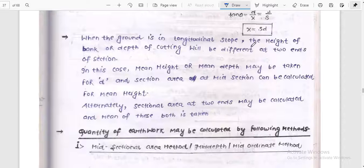When the ground is in longitudinal slope, the height of the bank or depth of cutting will be different at two ends of the section. In this case, mean height or mean depth may be taken for D, and section area at mid section can be calculated for mean height.